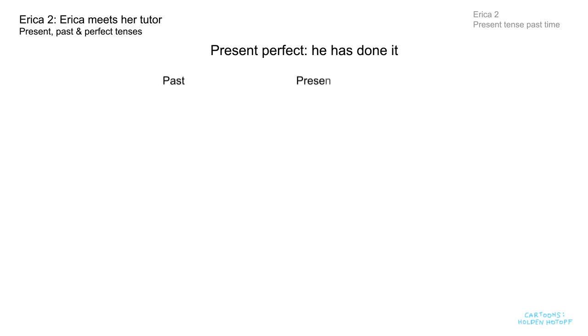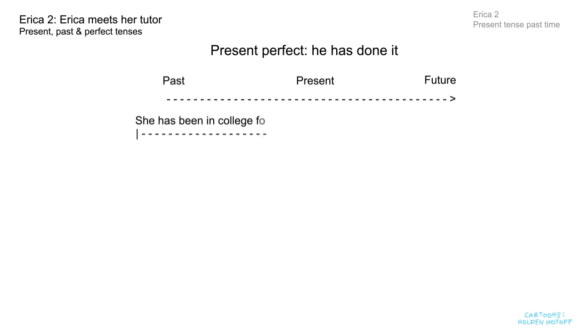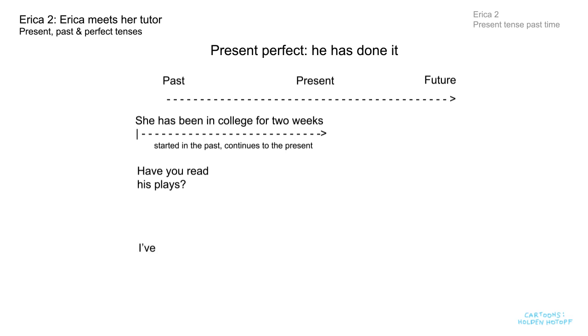And now for the present perfect. I'm going to build up a little drawing to illustrate three sentences from the story. First I'll put past, present and future, then a timeline to show time passing. Here's the first sentence: 'She has been in college for two weeks' — that's to say, she started in the college two weeks ago and she's still there. Here's another sentence: 'Have you read his plays?' And the answer: 'I've read Hamlet.' Now she started and finished reading Hamlet in the past, but her teacher Michael wants to find out what she knows now.